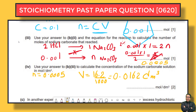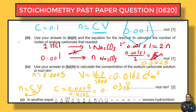Using n = CV and rearranging to find concentration: C = n ÷ V = 0.0005 ÷ 0.0162. Use your calculator — the answer should be approximately 0.0308, so you can write 0.03 mol/dm³.